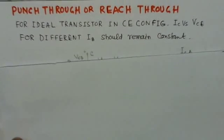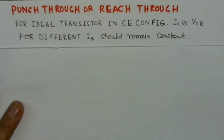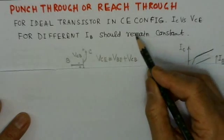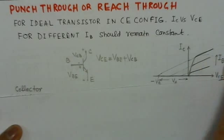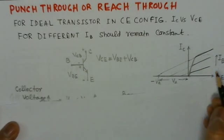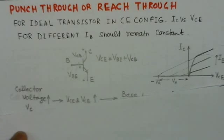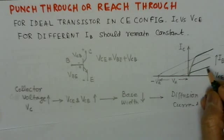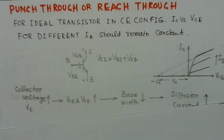Now we see these important regions like punch through or reach through. What is the punch through and the reach through? Normally for ideal transistors, we plot a common emitter configuration plot IC versus VCE. The plot is like this. For low values of the collector voltage, these characteristics are flat. But if this collector voltage is increased, then these characteristics are not flat, and there is some special effect that comes in.